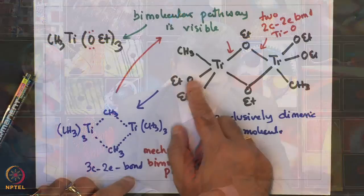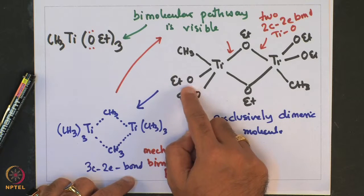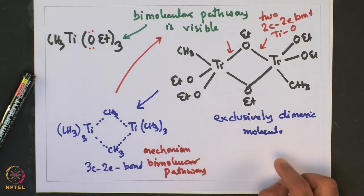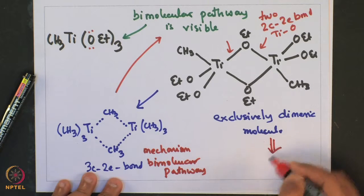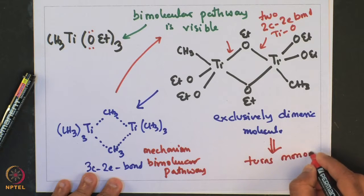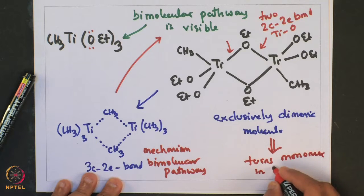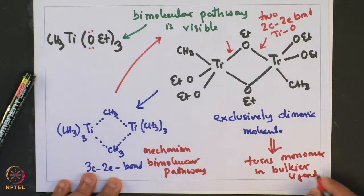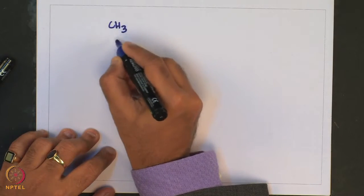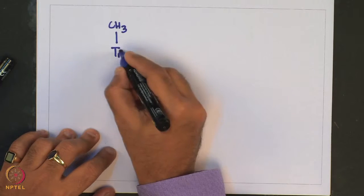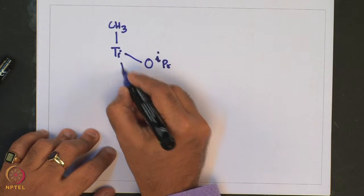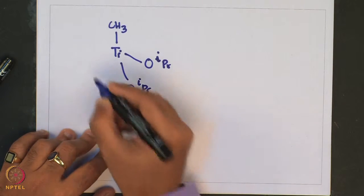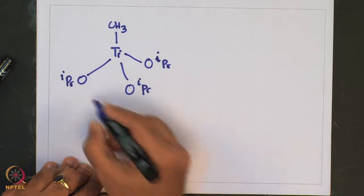If one increases the steric bulk of the ethoxide in titanium to something bulkier, for example isopropoxide, even the dimer becomes a monomer. This brings us to the important compound titanium methyl triisopropoxide, which exists mostly as a monomer.